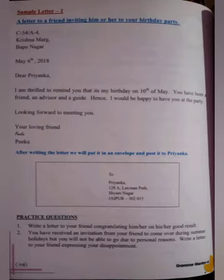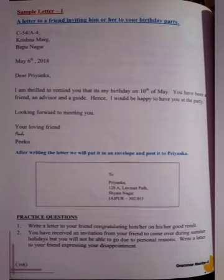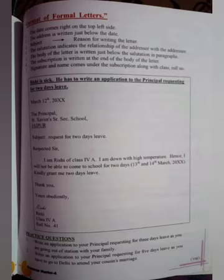Continue with 'Looking forward to meeting you. Your loving friend, Piku.' That completes the informal letter. You put it in an envelope and post it to Priyanka. Now, on the next page, look at the format of the formal letter. The date comes on the top left side.